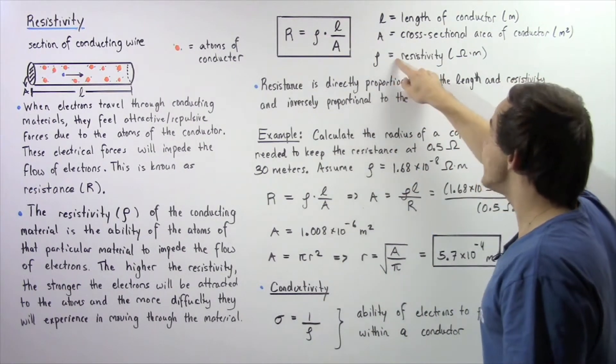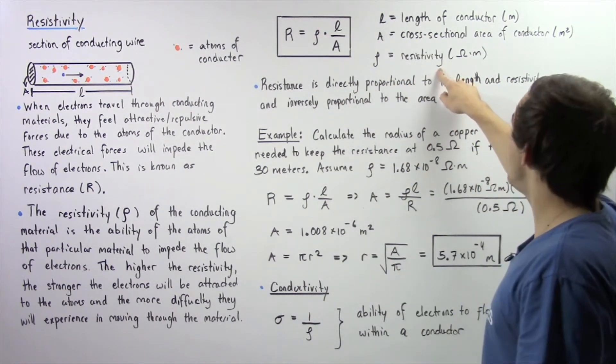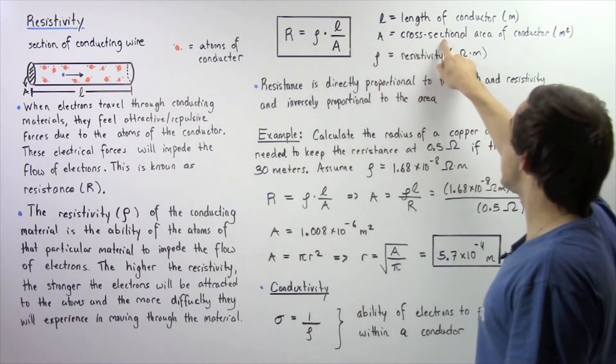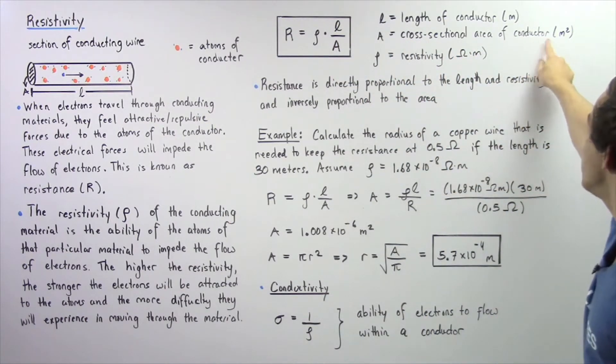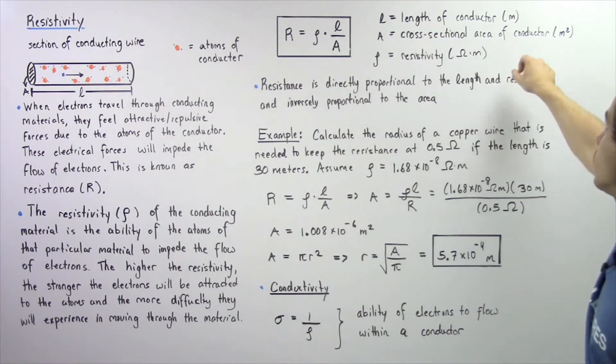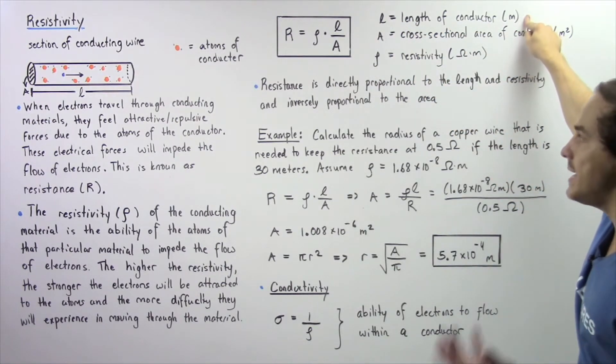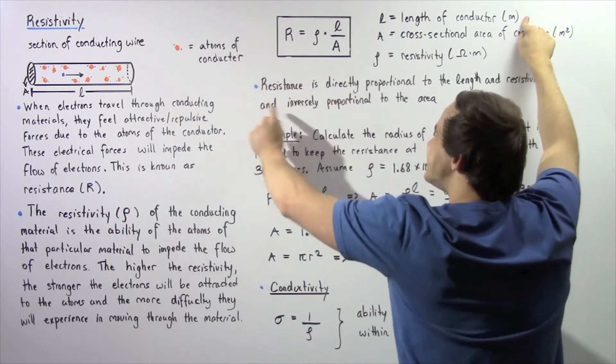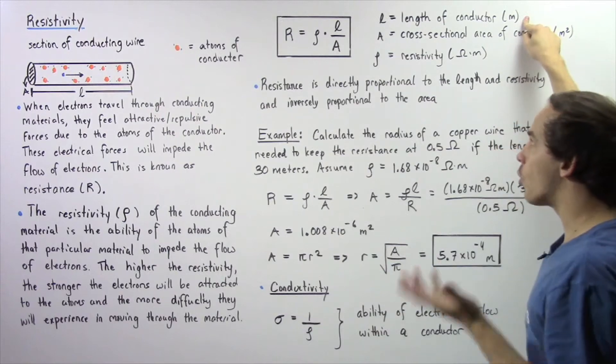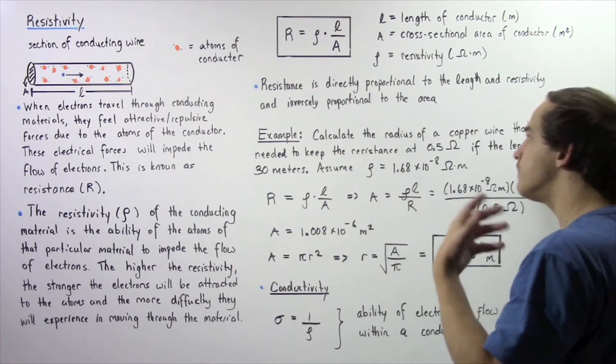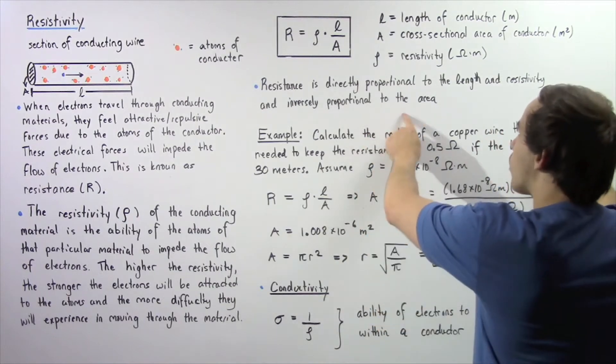Once again, ρ is the resistivity with units omega-meters, A is the cross-sectional area of the conducting wire in meters squared, and L is the length of the conductor wire in meters. We see from this equation that the resistance is directly proportional to our length and the resistivity and inversely proportional to our area.